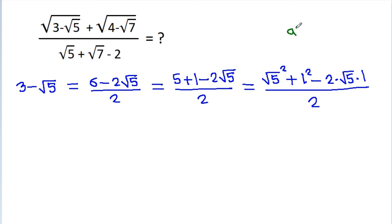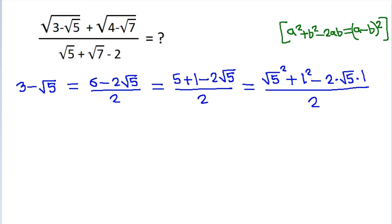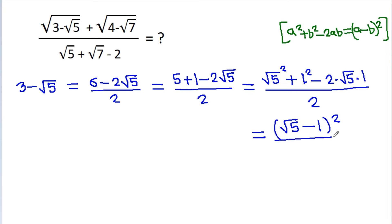And since a squared minus 2ab plus b squared equals a minus b squared, it will be equal to square root of 5 minus 1 squared, divided by 2.